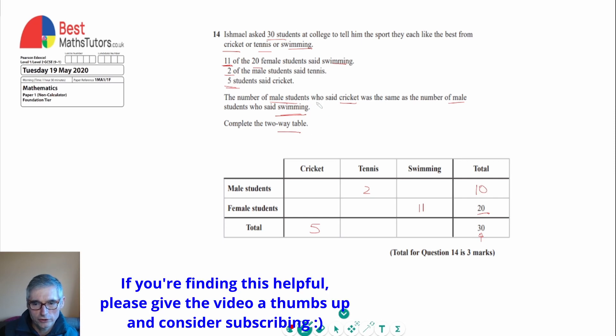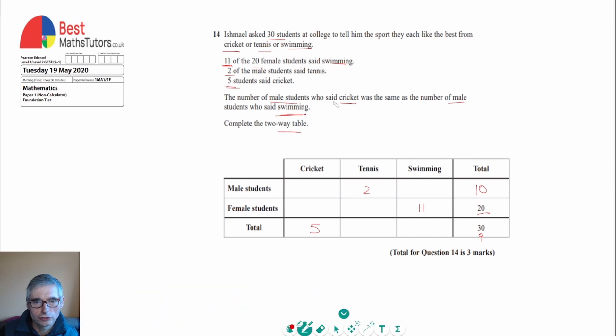The next bit of information we're going to use is that the number of male students who like cricket is the same as the number of male students who said swimming. So this value here and this value here are the same. And also we know that because two like tennis and the total is 10, then this plus this must be the difference between two and 10.